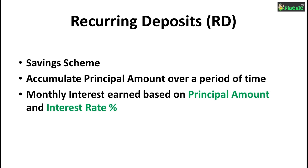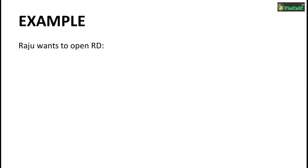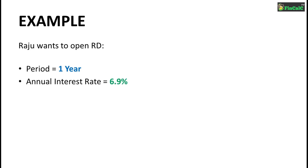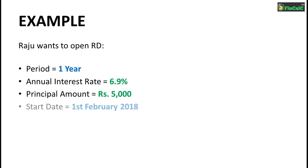Let's understand this with the help of an example. Let's say Raju wants to open a recurring deposit for one year. He goes to his bank or post office and realizes that the current interest rate on recurring deposits is 6.9%. So he opens a recurring deposit of principal amount of Rs 5,000 on 1st of February 2018 for a period of one year.